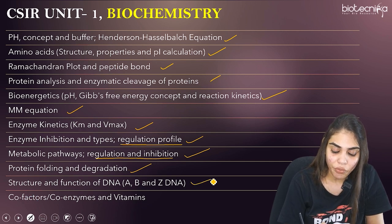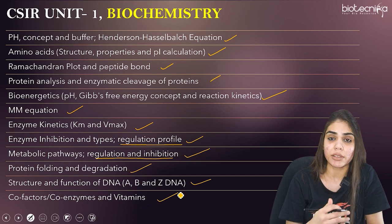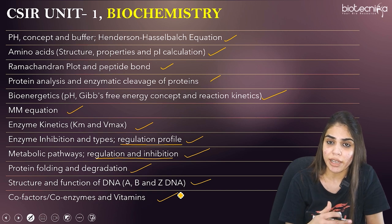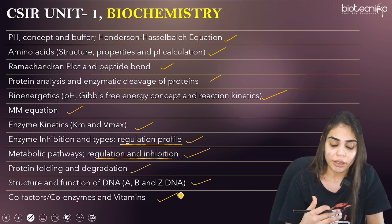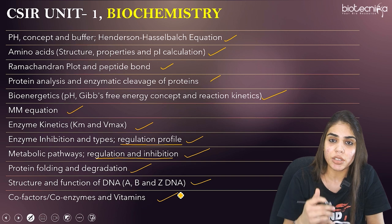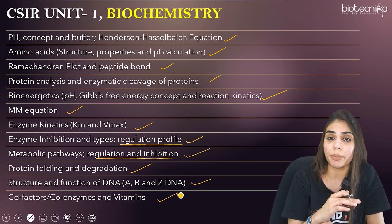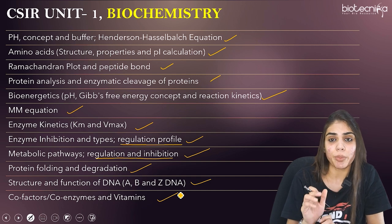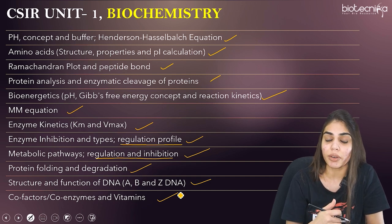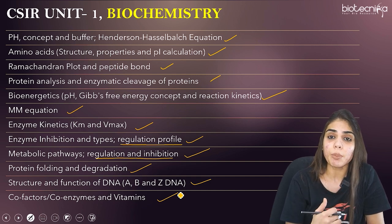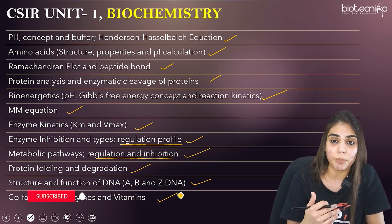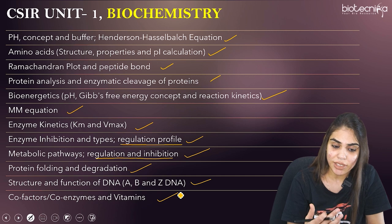The next topic is co-factors, coenzymes, and vitamins — the easiest and most important part, from which questions are asked every year. Usually a match-the-following question is asked where you match a vitamin name with coenzymes from column A to column B. These are all the important topics from biochemistry that you should not leave if you are preparing for the upcoming CSIR Net Life Sciences examination.